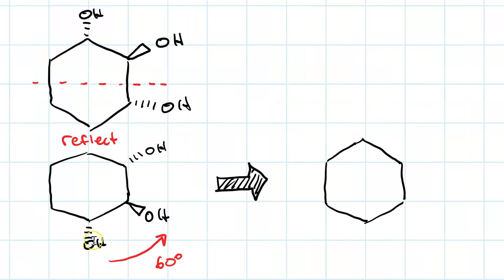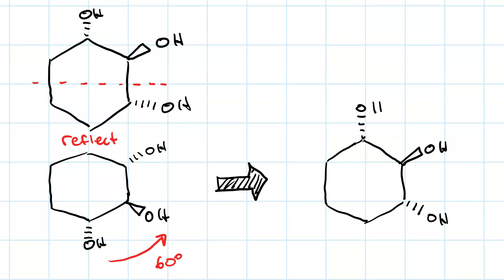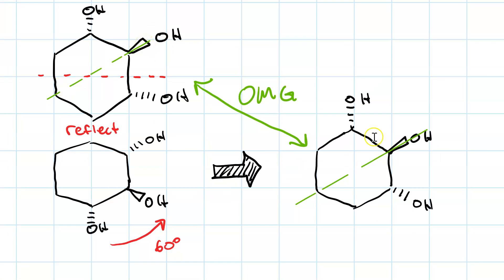Well, that means I need to take this hydroxyl group that was on the bottommost carbon and put it here on a dash. The one that was on a wedge here goes on a wedge here. And this one that was on a dash goes on a dash on the topmost carbon over here. And you're probably saying to yourself, it's the same! The mirror plane was there all along, just not where you had seen it before. There it is. So, this molecule is, in fact, meso.